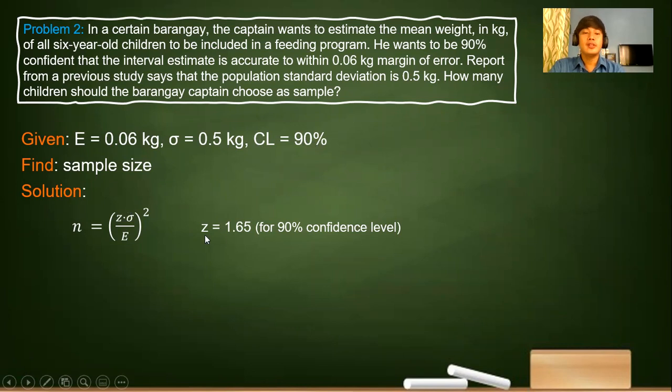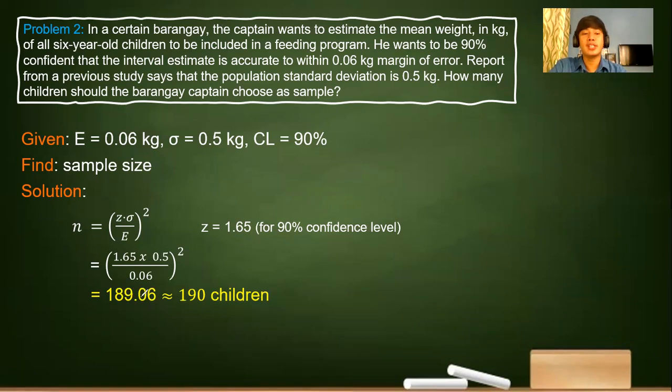Since our z uses a 90% confidence level, our z confidence coefficient is 1.65. Substituting the values, we have 1.65 times 0.5 over 0.06 squared. The approximate value is 189.06. Observe that this 0.06 is insignificant, so we round it up to the next whole number. The next whole number of 189 is 190 children. Again, the rule is rounding up.